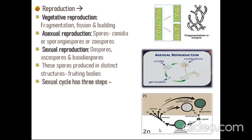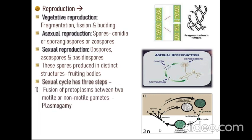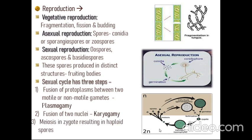The fungal sexual life cycle has three steps. First, fusion of protoplasm between two motile or non-motile gametes occurs — this is known as plasmogamy. Second, fusion of two nuclei occurs — this is karyogamy. Third, meiosis occurs in the zygote, resulting in haploid spores.